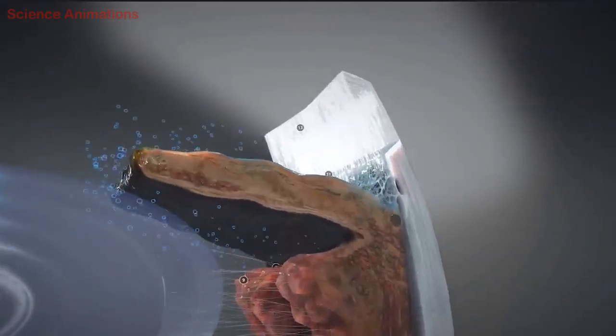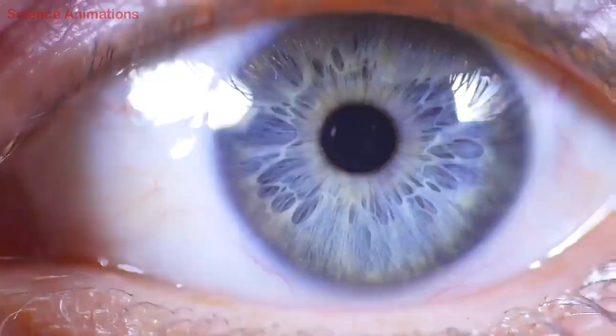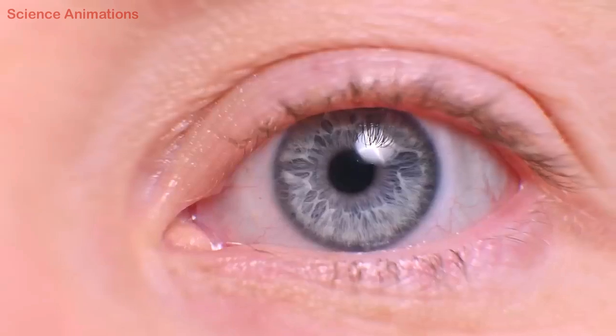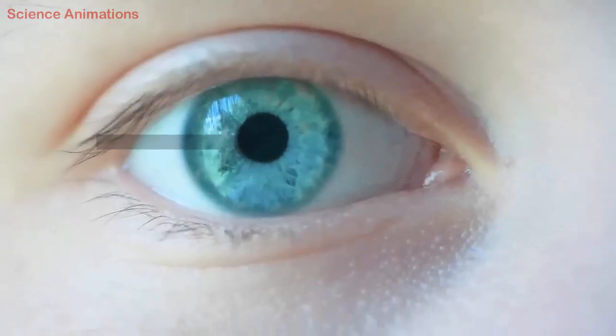These chambers contain fluid secreted by the epithelial cells of the ciliary body. The iris is a circular structure that contains pigments. The color of the iris is due to these pigments.